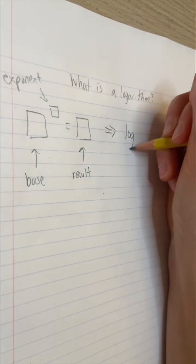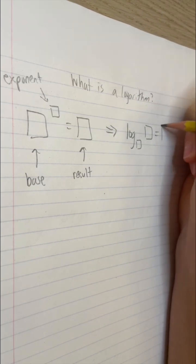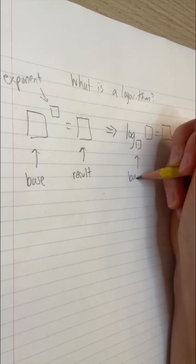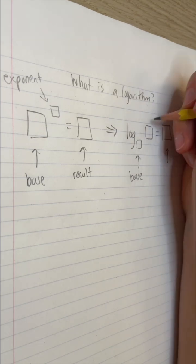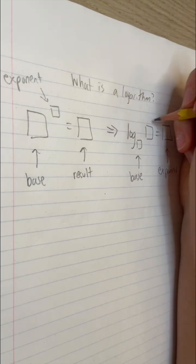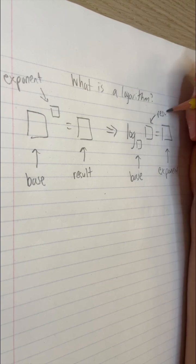Knowing the base and knowing the result, which some people call the argument, a log calculates the unknown exponent. I'm going to name the base b, the exponent a, and the result c, so we can see where each piece goes.